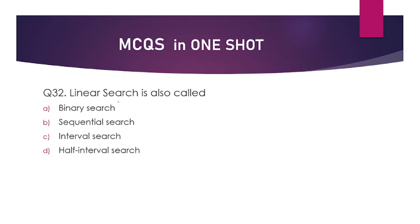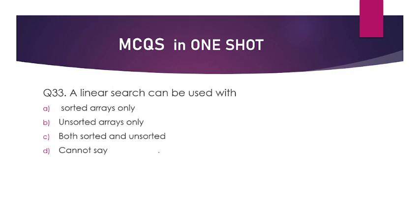Next question. Linear search is also called binary search, sequential search, interval search, or half interval search? The answer is sequential search. And binary search we call half interval search. Answer is option number B.